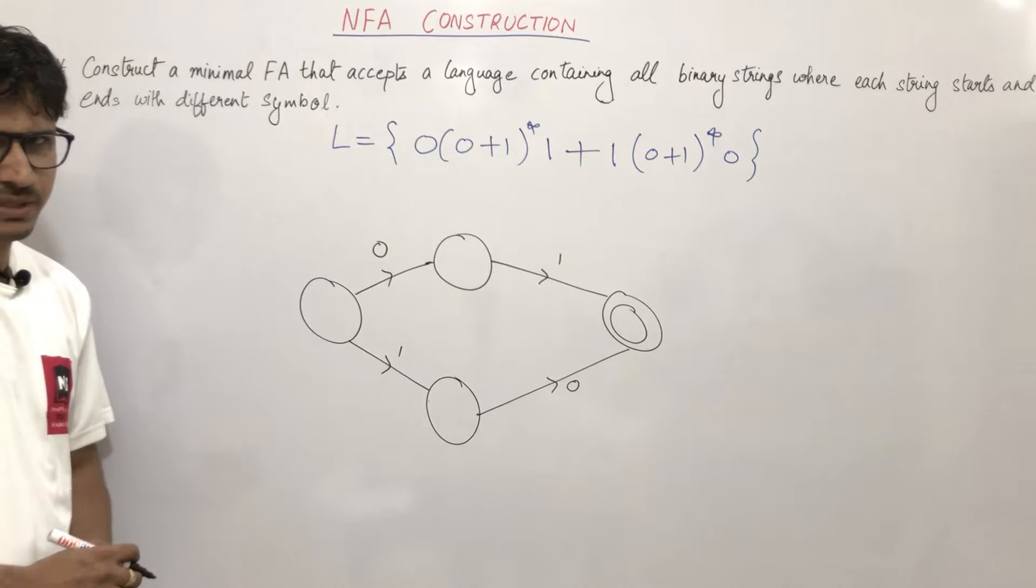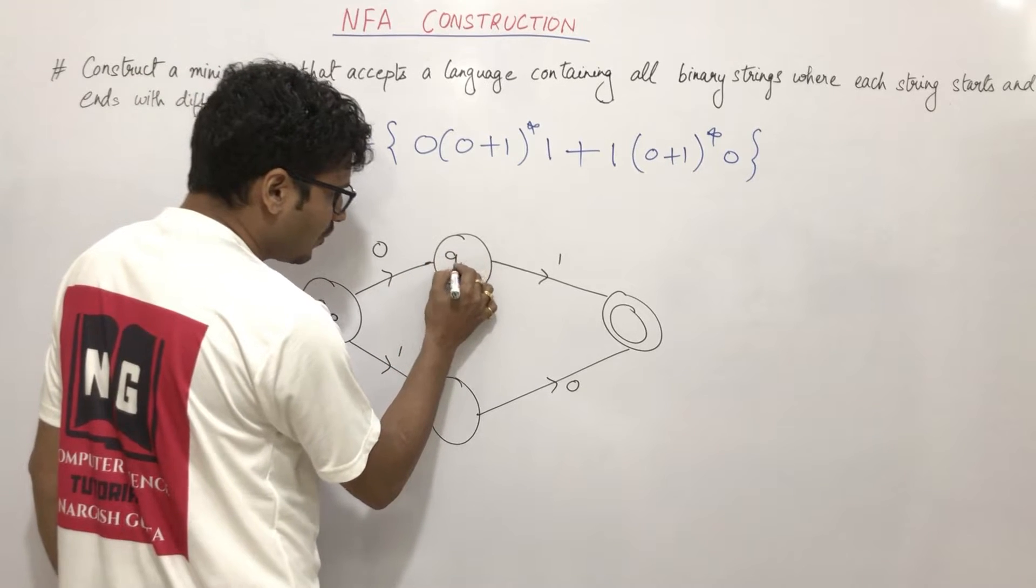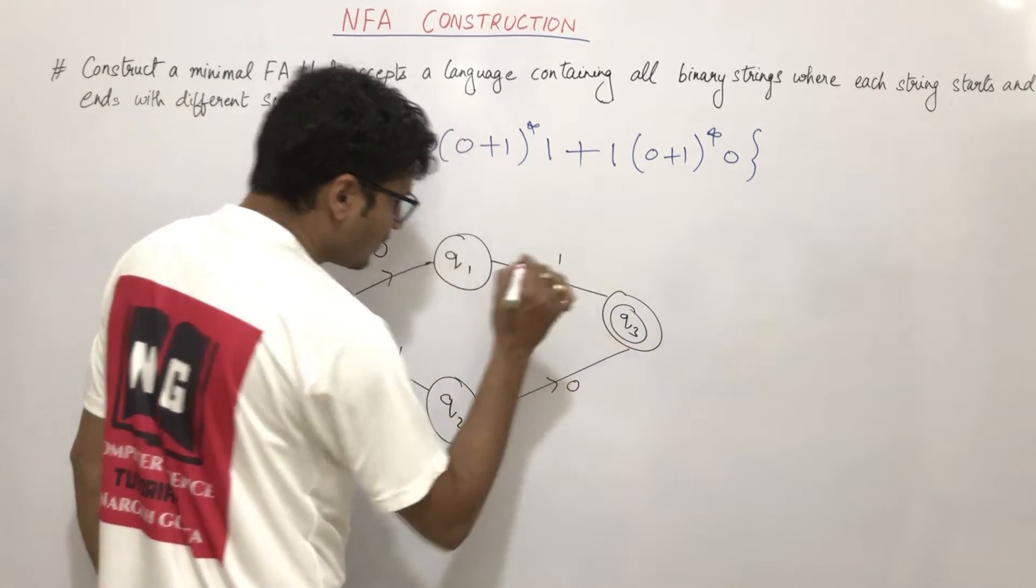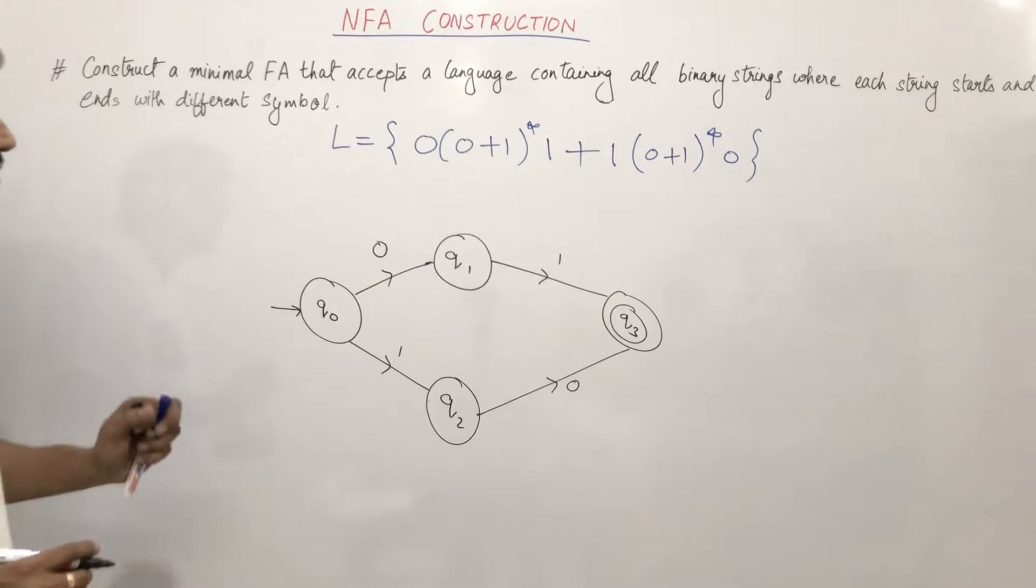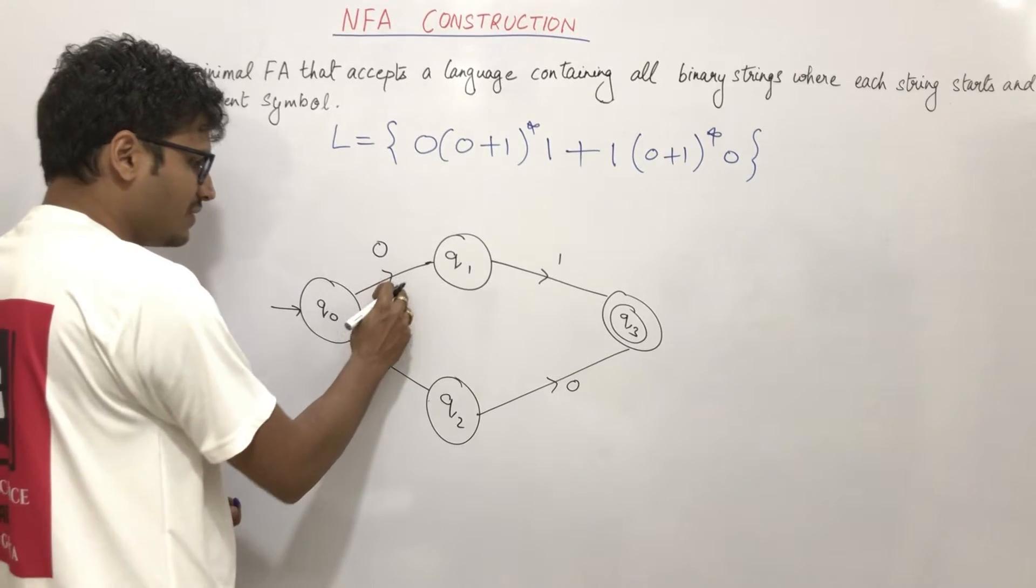One starting with 1, ending with 0. This is the final state. So this is our basic machine. Now let's name these states - this is q0 state, this is q1 state, this is q2 state, this is q3 state. Now if this question was DFA, then in DFA case we would have to show transitions for both 0 and 1.